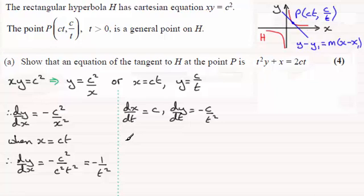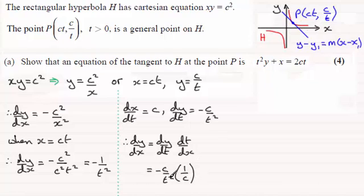So therefore dy dx is equal to dy by dt times dt by dx using the chain rule. And so therefore dy dt is minus c over t squared. And we multiply that with dt by dx which is to invert that. Take the reciprocal, it'll be 1 over c. The c's cancel and you can see that we're left with minus 1 over t squared.